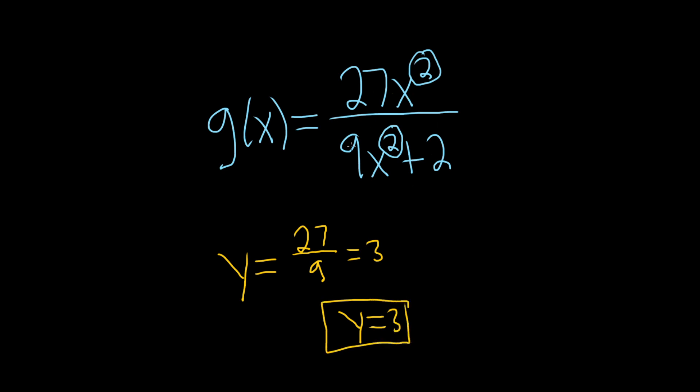Again whenever these match all you do is divide these numbers. If instead it was like 27x over 9x squared plus 2, well in this case the degree is bigger on the bottom. Here it's 2 and here it's 1. In a situation like this the answer is always 0.